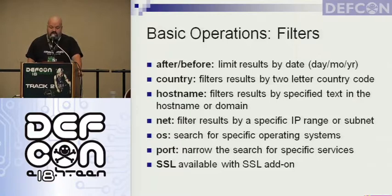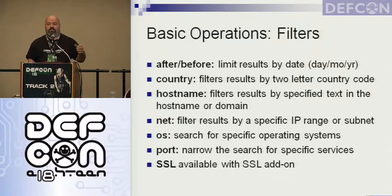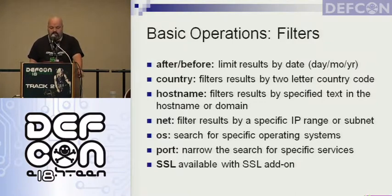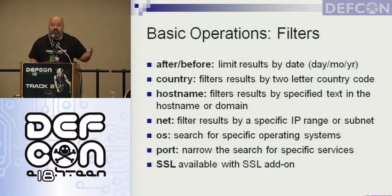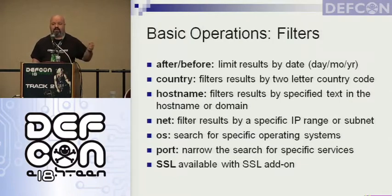The country filter uses a two-letter country code to filter by the country the IP address is registered to — for example, country:US limits results to US-registered IP addresses. The hostname filter filters by text in the hostname or domain. So if we want to limit our results to the .edu domain, or to google.com, or whatever words you want to use in the domain or hostname, you can limit your results to that.